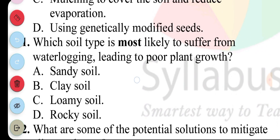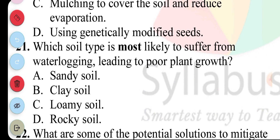Question 21. Which soil type is most likely to suffer from waterlogging, leading to poor plant growth? A. Sandy soil, B. Clay soil, C. Loamy soil, D. Rocky soil. The answer to question 21 is B. Clay soil.